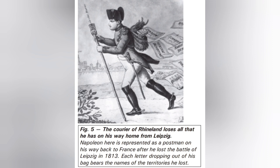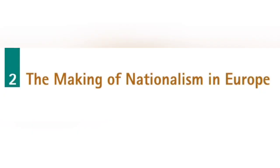Figure 5: The Courier of Free Lands Loses All That He Has on His Way Home from Leipzig. Napoleon here is represented as a postman on his way back to France after he lost the Battle of Leipzig in 1813. Each letter dropping out of his bag bears the names of the territories he lost.